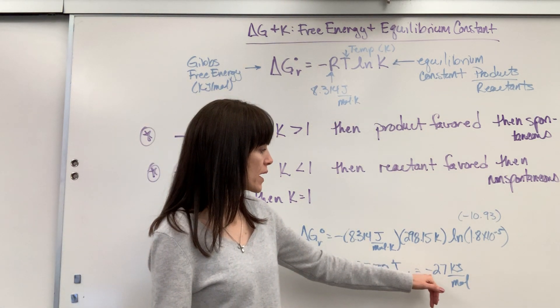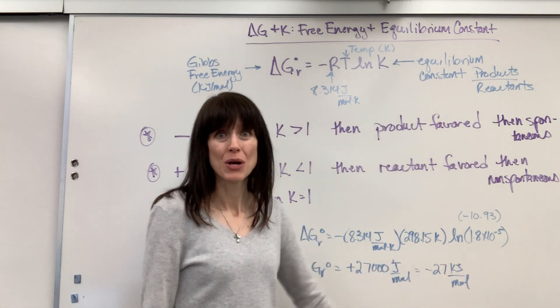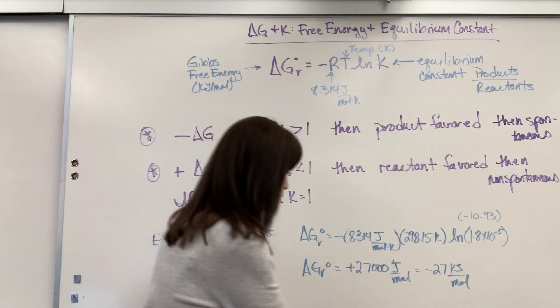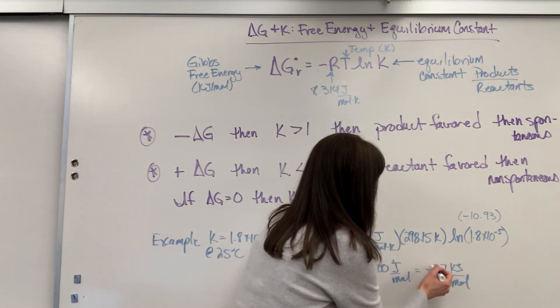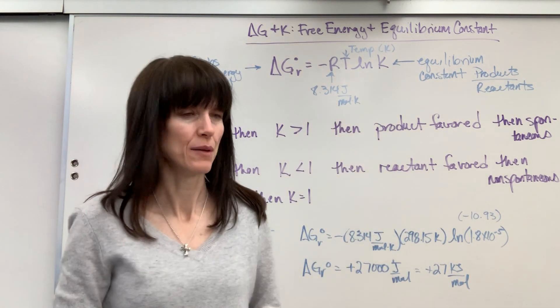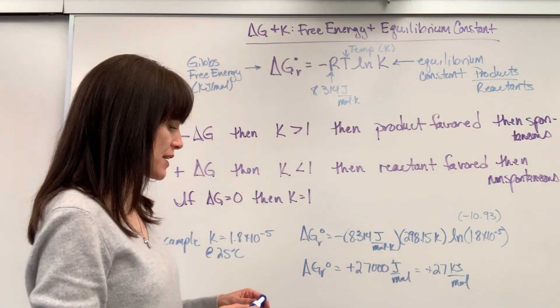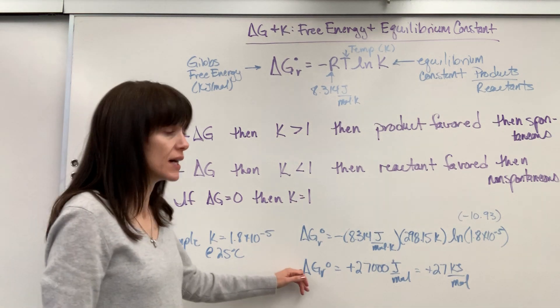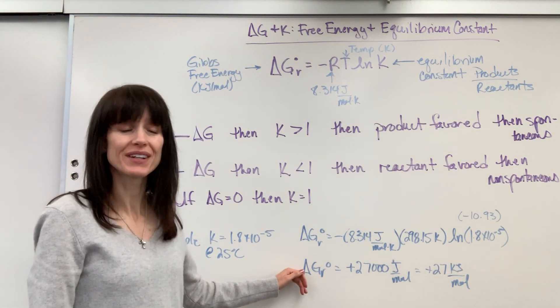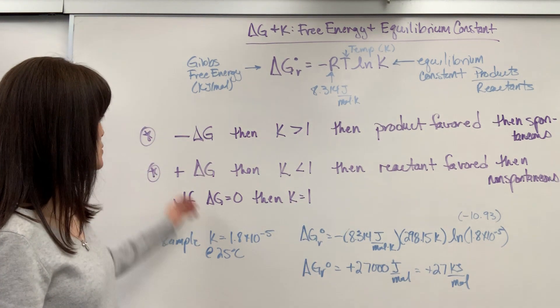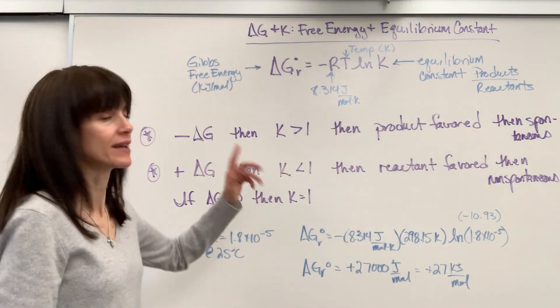I just divided by 1,000 and got it to 27 kilojoules per mole. Oh, so sorry, that's a positive right there. Sorry, I missed one line, makes a difference. A positive 27, sure enough, non-spontaneous, reactant favored, and you can see positive delta G, K is less than 1.